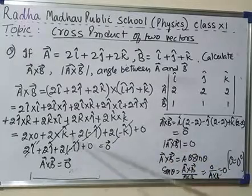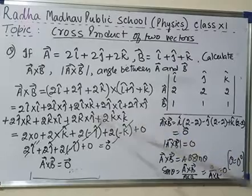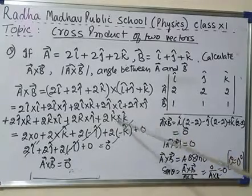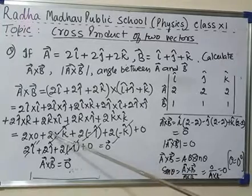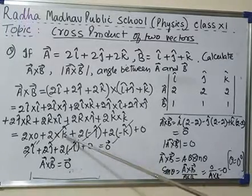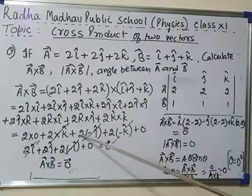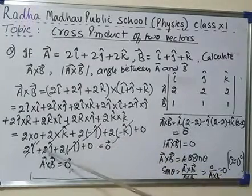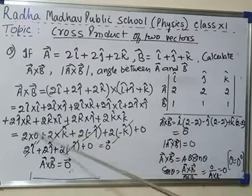K cross k is 0. Here it is 2k cap minus 2k cap, minus 2j plus 2j, plus 2i minus 2i. All the terms are cancelled out, which gives 0.